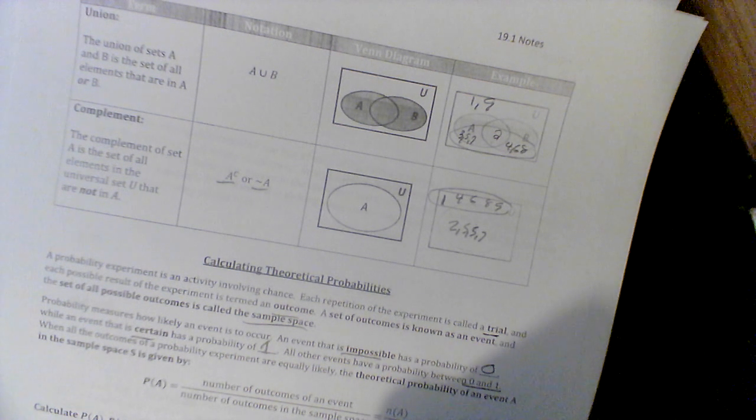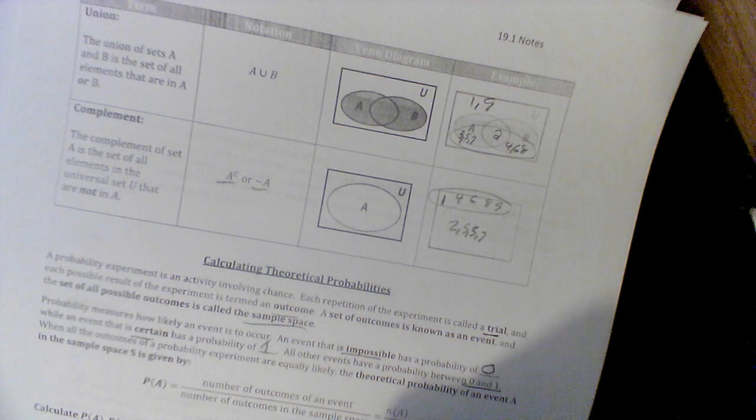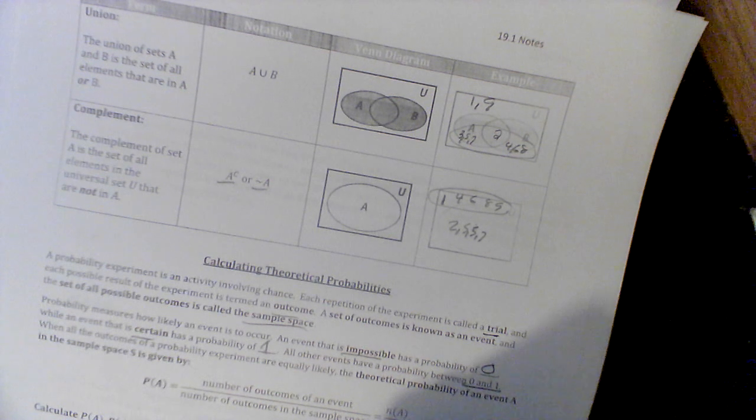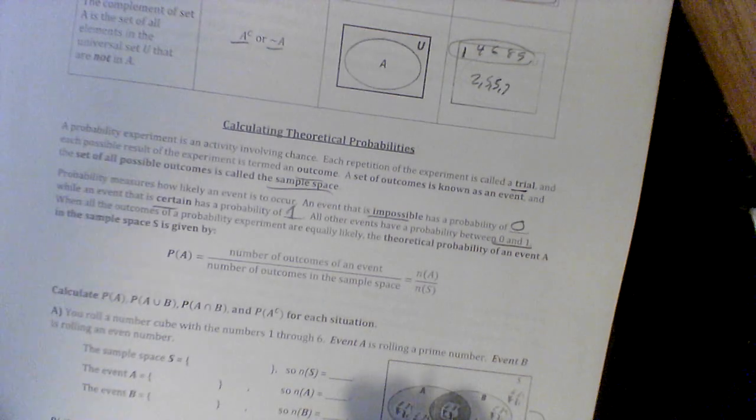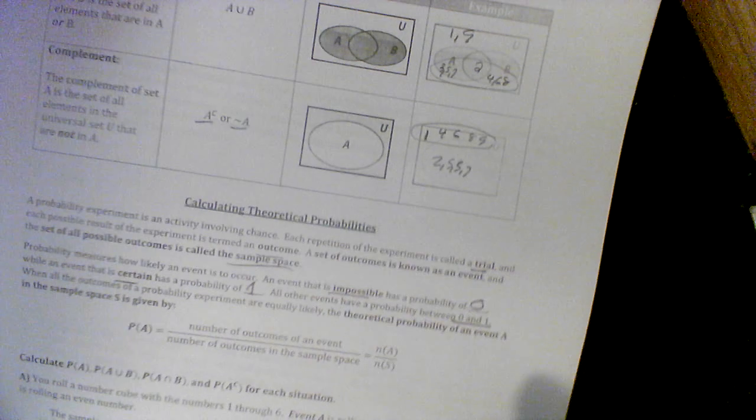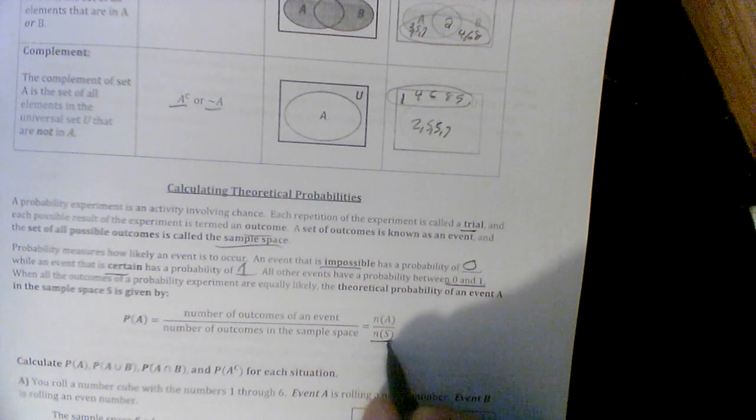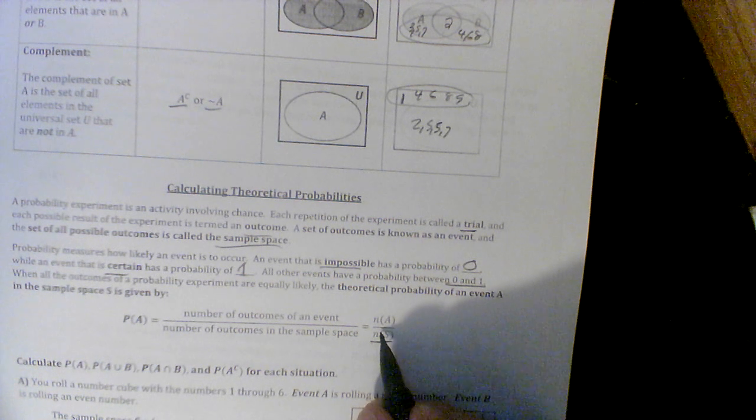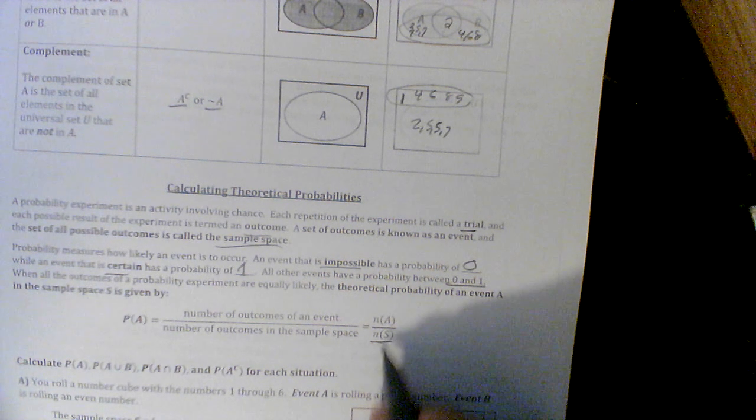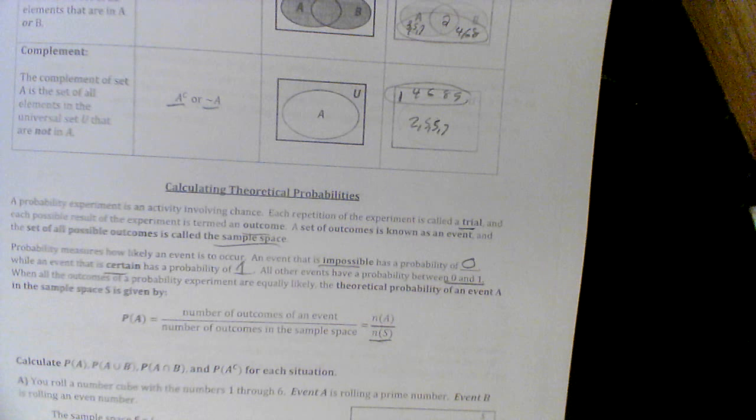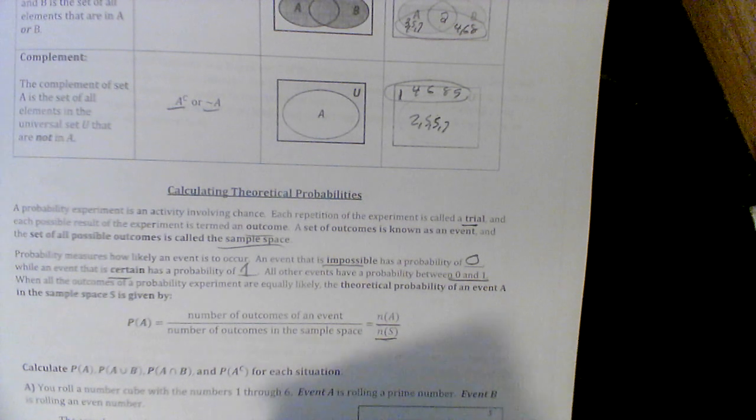All other events have a probability somewhere between 0 and 1. When all the outcomes of an experiment are equally likely, the theoretical probability of an event is given by this formula: the number of possible outcomes of the event you're looking for over the total number of outcomes in the sample space. Let's go ahead and talk through this.